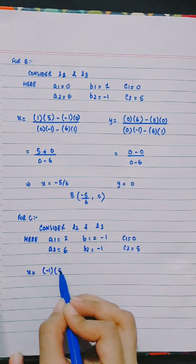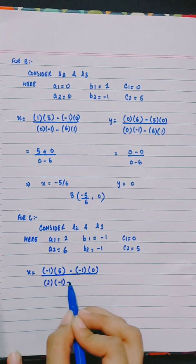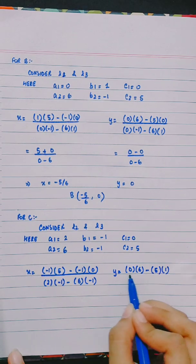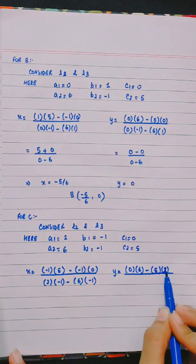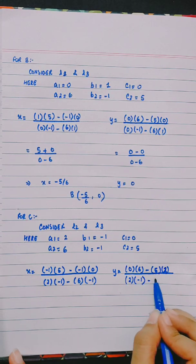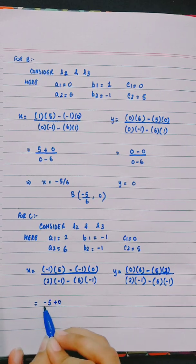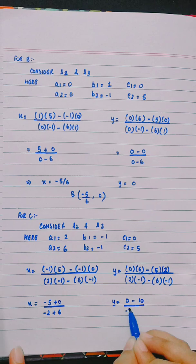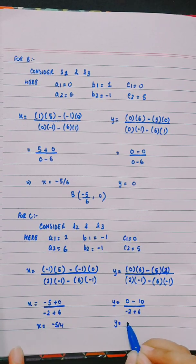x equals minus 1 into 5 minus minus 1 into 0 divided by 2 into minus 1 minus 6 into minus 1. This gives minus 5 divided by minus 2 plus 6, so x equals minus 5 by 4. y equals 0 into 6 minus 5 into 2 divided by minus 2 plus 6, giving y equals minus 5 by 2.